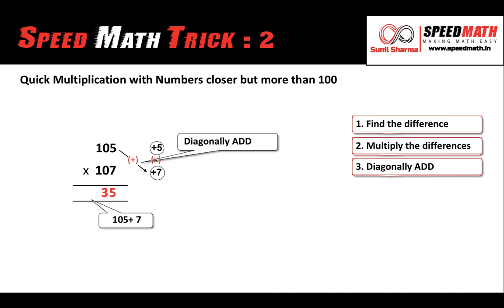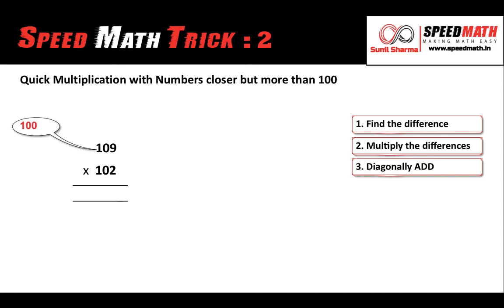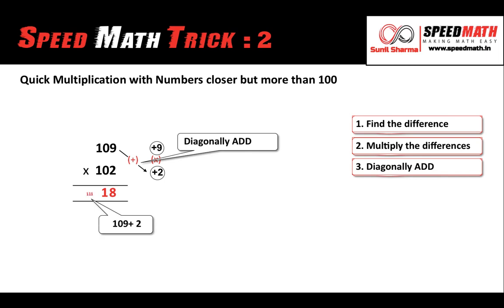Let me take one final example so that you understand in a better way. 109 is 9 more than 100 and 102 is 2 more than 100. 9, 2 × 9 is 18, already a double digit so no need to put any 0. And 109 plus 2 will give you 111. I hope you have enjoyed learning this technique with me.